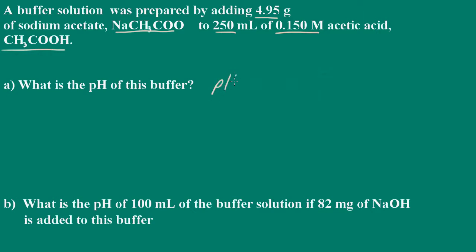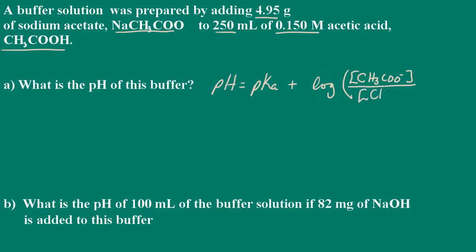We're going to be using the Henderson-Hasselbalch equation, so I'll go ahead and write that. That's the pKa plus the log, and here we have the concentration of the acetate ion — which comes from the sodium acetate — and then the concentration of the acetic acid. We already have the concentration of the acetic acid, and that is 0.15 molar.